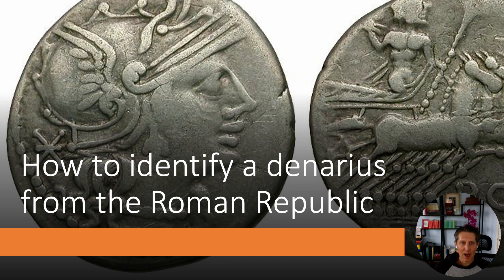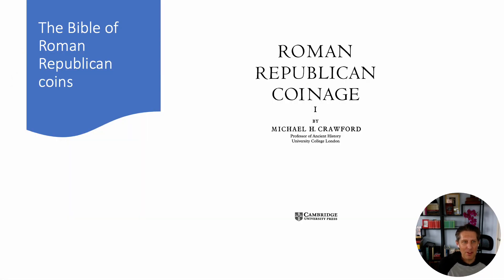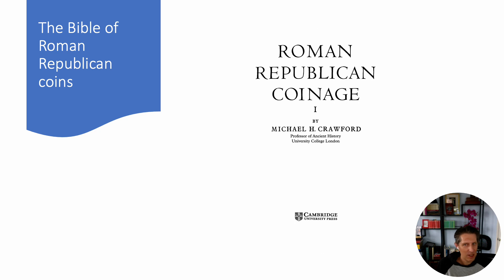So you have a Roman denarius from the Roman Republic — how do you find this thing? This is the Bible for Roman Republican coins. It's called 'Roman Republican Coinage,' by Michael Crawford. This is used by both scholars and collectors. If you are a collector of Roman Republican coinage, you'll be using Crawford to identify your coins, and if you're a scholar, you'll also be using Crawford. This is far and away the best resource for these particular pieces of historical evidence.